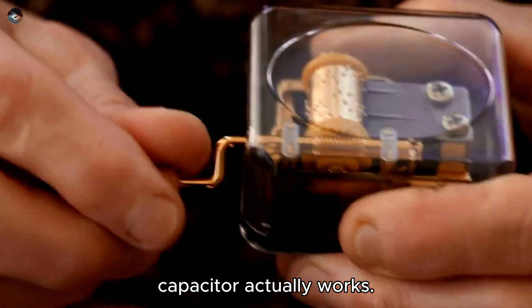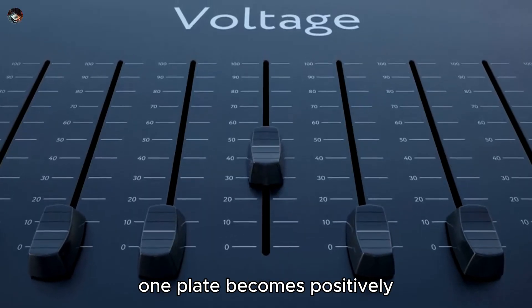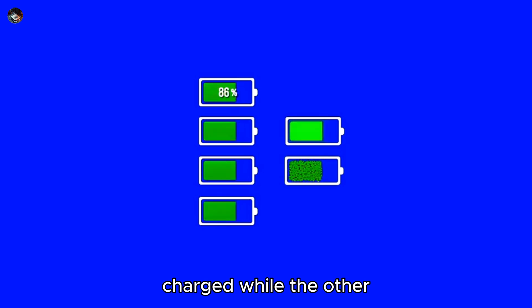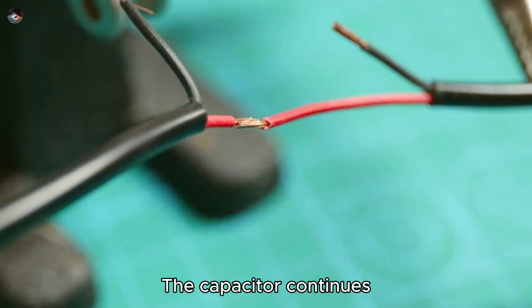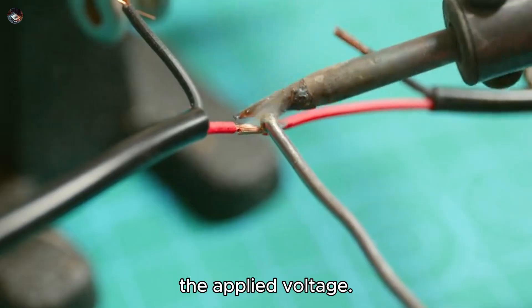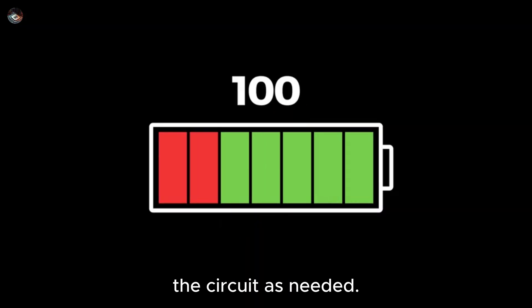Now, let's see how a capacitor actually works. When a voltage is applied, one plate becomes positively charged, while the other becomes negatively charged. This creates an electric field in the dielectric. The capacitor continues charging until it matches the applied voltage. Once fully charged, it can release this energy back into the circuit as needed.